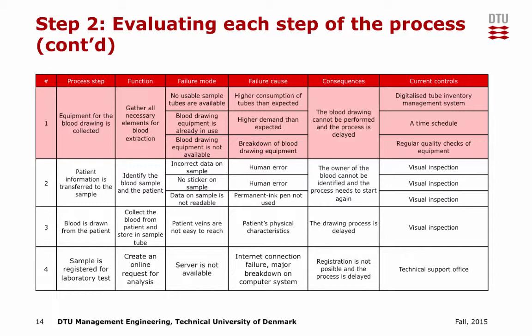Let's take process step number one as an example: equipment for blood drawing is collected, meaning all necessary elements for blood extraction are gathered. There are three possible failure modes. Looking at the first one: no usable sample tubes are available. The failure cause can be higher consumption of tubes than expected. The consequence is that blood drawing cannot be performed and the process is delayed. The current control is a digitalized tube inventory management system.